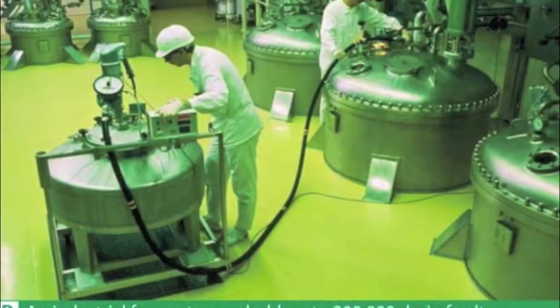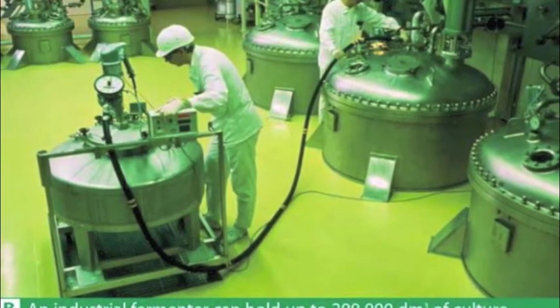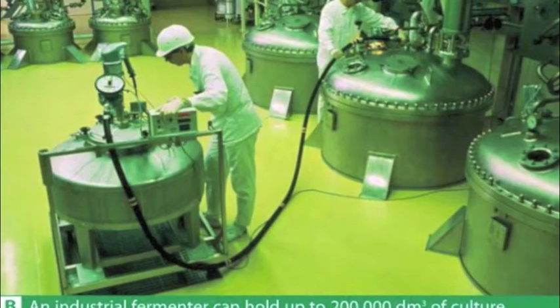Industrial fermenters are used to make a wide range of products. As well as human insulin, a number of medicines are made, such as the antibiotic penicillin, which is a product of a mould called penicillium. Many other species of microorganisms are grown in fermenters to produce foods and drinks.